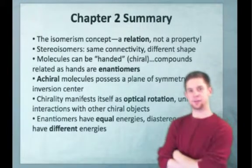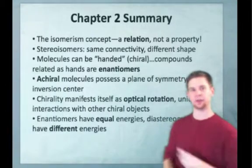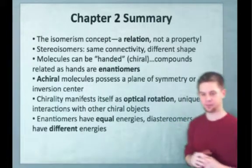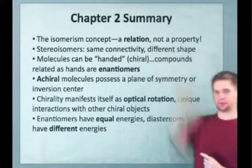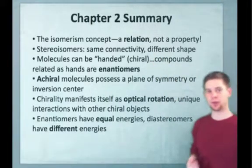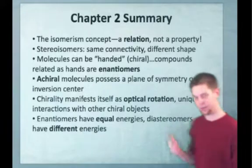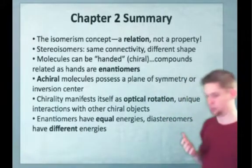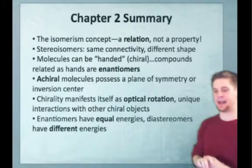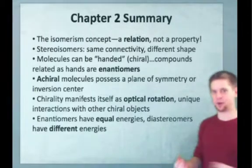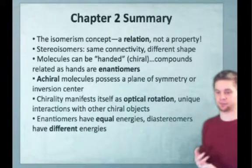This brings us to the end of chapter two on stereoisomerism. In these last few minutes, I just want to summarize the chapter and hit the key points of what we've learned. The first thing we touched on was the idea of isomerism — it's important to remember that it's a relation between molecules, not a property of molecules. We can look at two molecules and ask whether they are isomers, but we can't look at a single molecule in isolation and ask if it is an isomer. That applies to every subclass, including stereoisomers and regioisomers, which we'll see later — all relations, not properties of molecules.